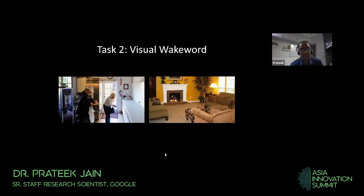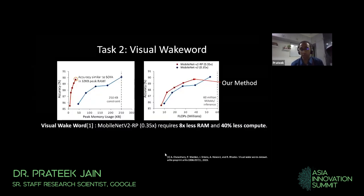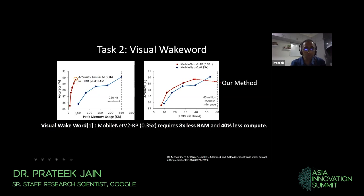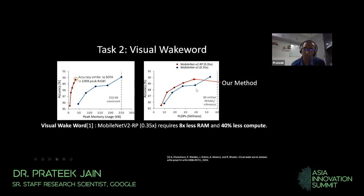Another application is visual wake words — imagine a low-end camera where a person comes in front of it, the camera recognizes the person and wakes up a larger system, like a coffee machine or laptop. There is a visual wake word dataset proposed by Chaudhary et al., with a formal competition where one of the best methods was MobileNet V2. We are able to get accuracy similar to MobileNet V2, but with only about 32 kilobytes of RAM. Standard methods require about 250 kilobytes of RAM to get 90%+ accuracy, while we achieve almost the same accuracy in just about 32 kilobytes. Similarly, our compute also comes down by a factor of one third.